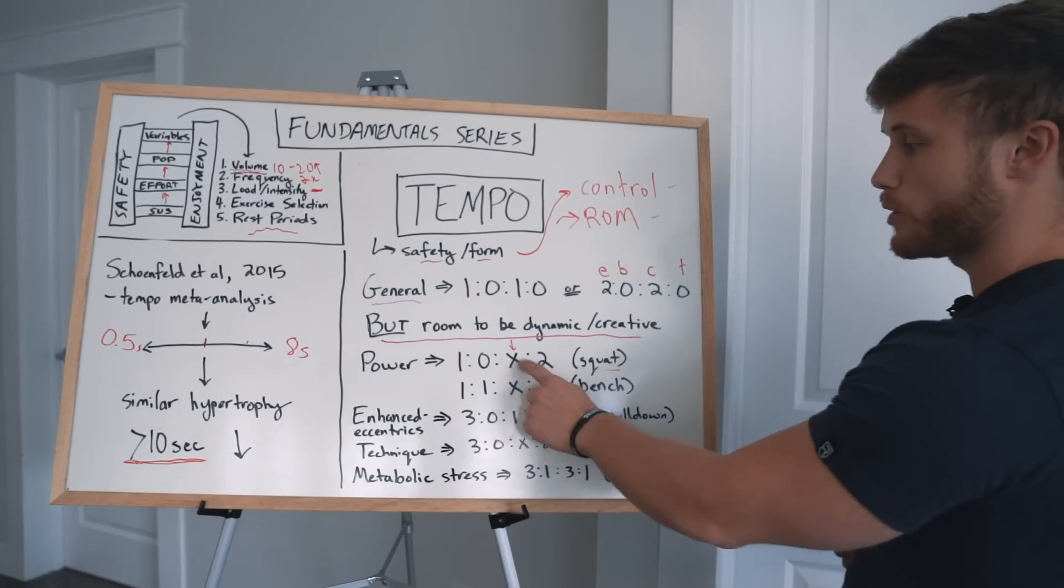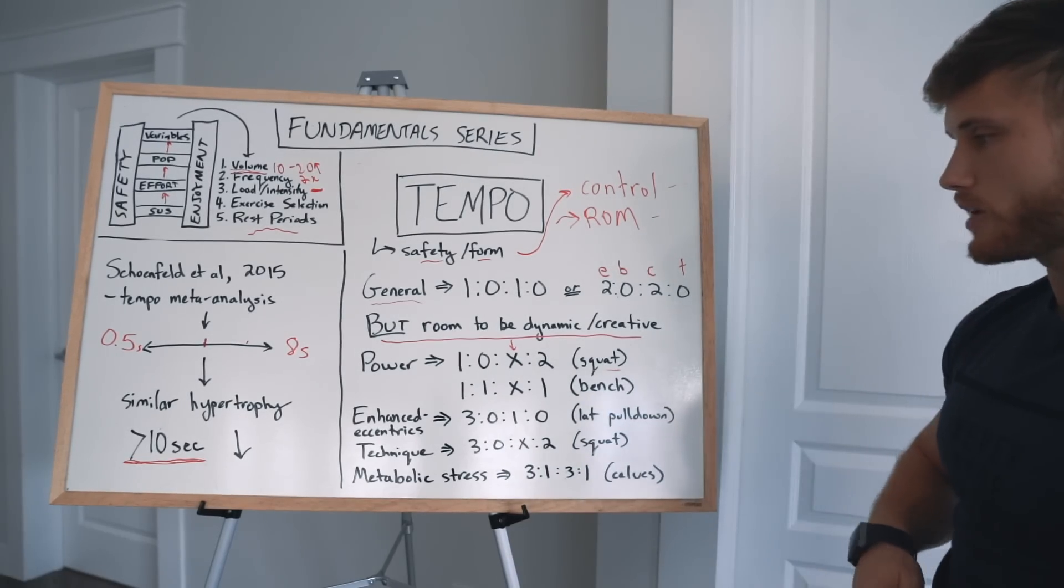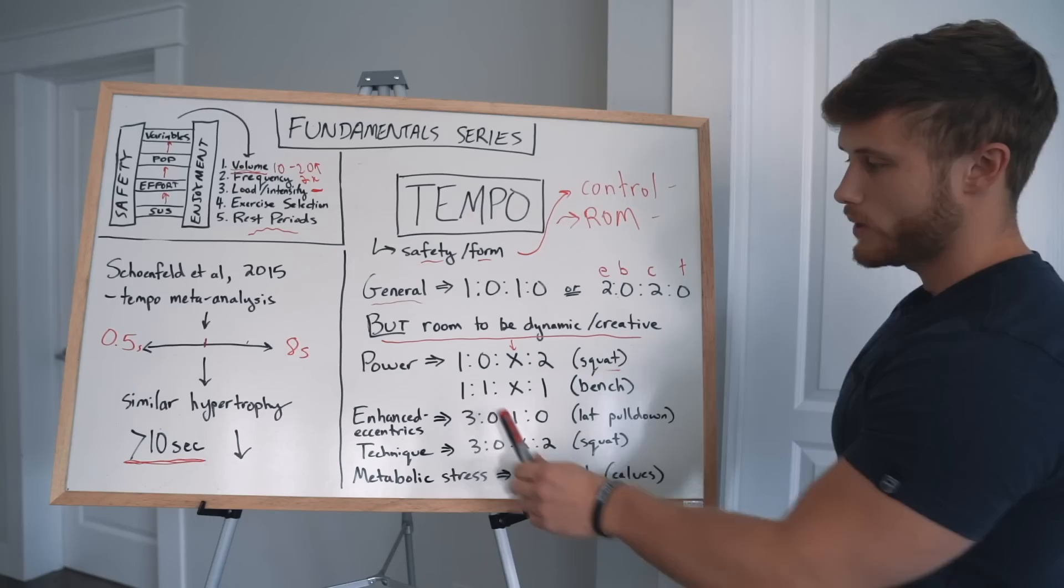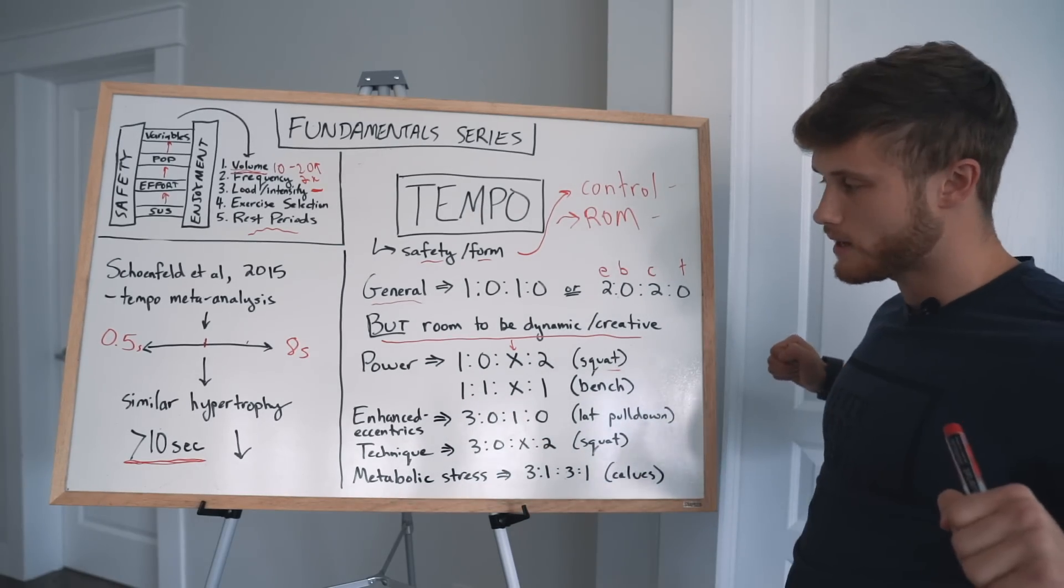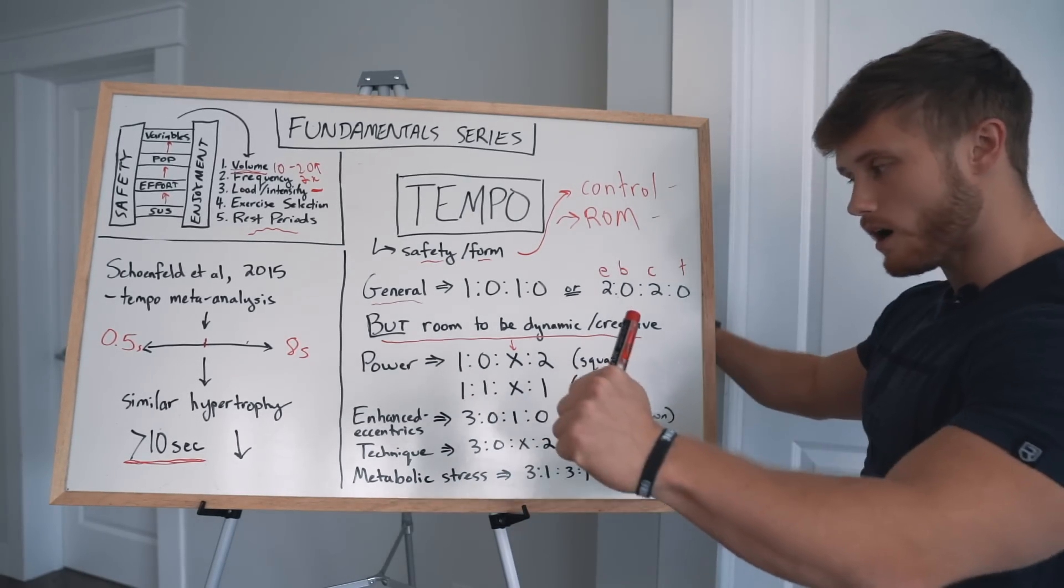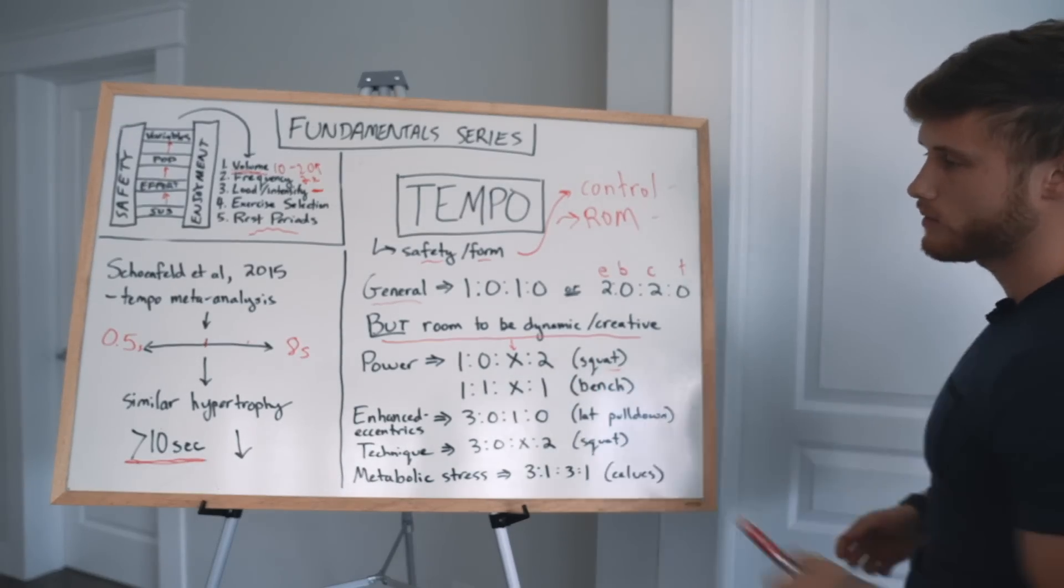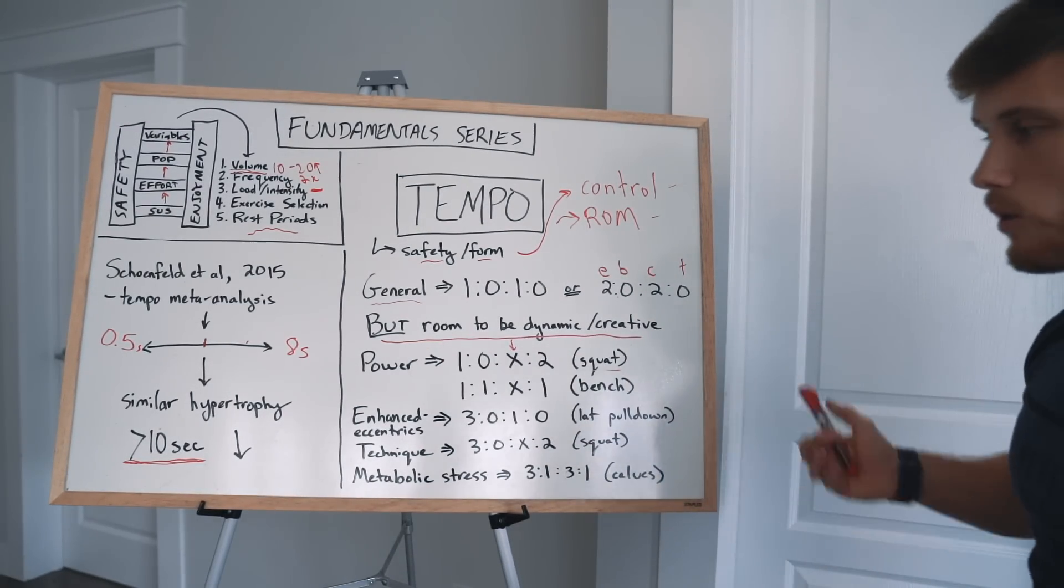So that's an example of how I would train power. You'd have your explosive speed on the concentric being trained here. And then the same thing could go for bench. So let's just do another quick example. We'd have a 1 second negative, we'd pause for 1 second on the chest, and we'd explode off the chest, and then we'd have 1 or 2 seconds up at the top to get your breath back in. So that's a tempo you can use to train power.